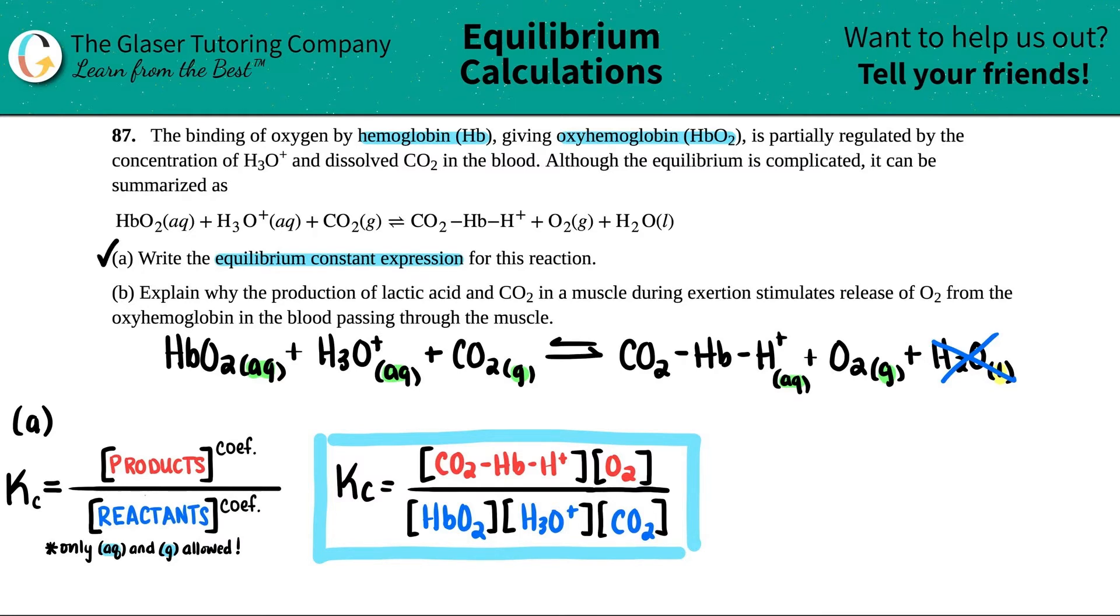Explain why the production of lactic acid and CO2 in a muscle during exertion, so when you're exercising, stimulates the release of O2 from the hemoglobin in the blood passing through the muscle. Okay, so that's coming back to this. So we are producing lactic acid and CO2.